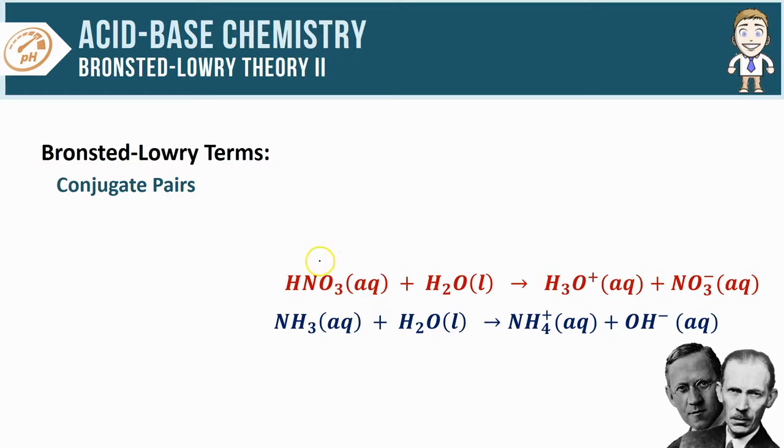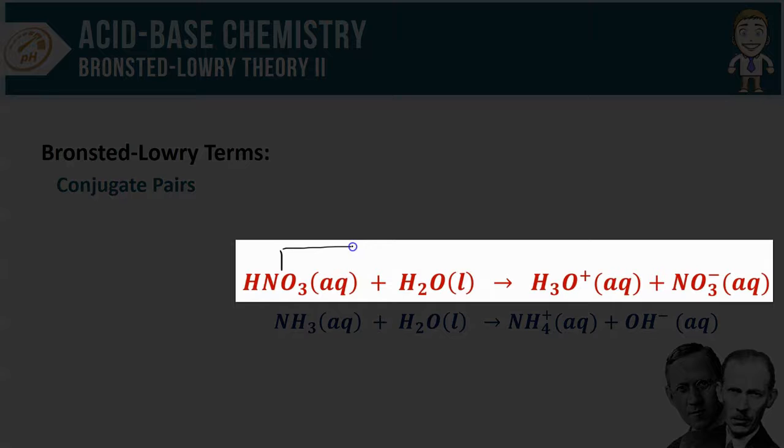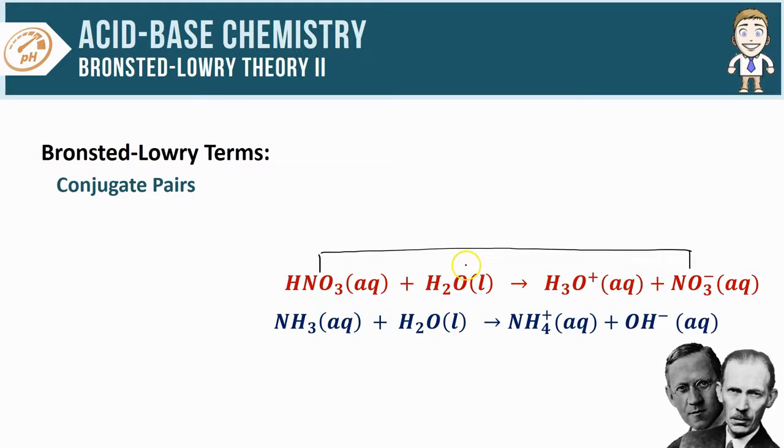This refers to a particle from the reactants side of the equation like HNO3 and showing what that particle turns into on the products side. So HNO3 turns into NO3 minus. Those two would be considered conjugate pairs, so would H2O and H3O plus.